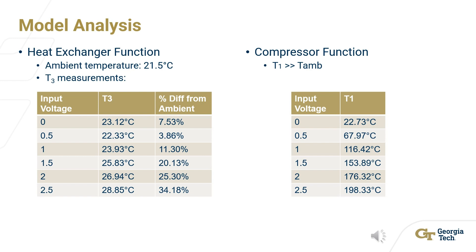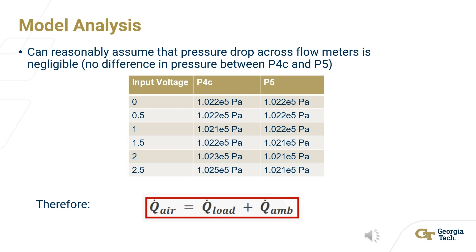From this chart, there is no observable difference in the pressure between the cold air at station 4 and at station 5. This essentially enables us to have an energy balance, where the energy transfer in the air is equal to the energy leaving the load plus the energy entering the system from the environment.